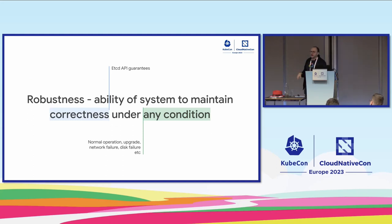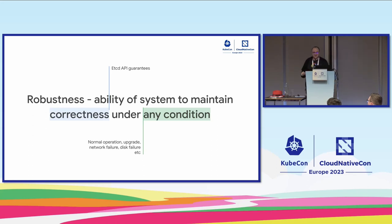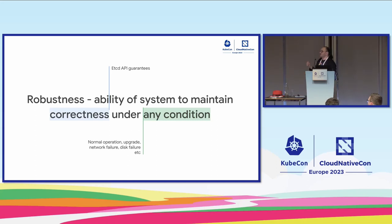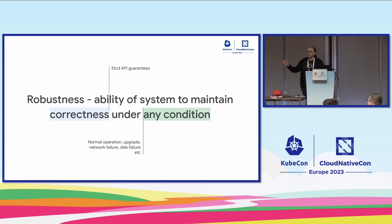I want to define what we are trying to validate as 'robustness': the ability of the system to maintain correctness under any condition. Correctness means any guarantee we are giving to our users. 'Any condition' means any condition — a cloud failure, a process problem, disk issues, or bit flips. We don't care what caused it; we just need a correct system.